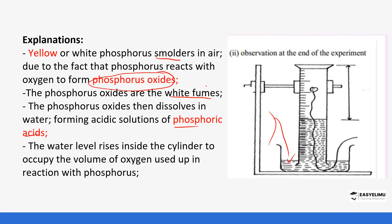The water level rises in the cylinder to occupy the space that was used up by oxygen. As the phosphorus reacts with the air to form oxides, it consumes the oxygen in the cylinder. The space initially occupied by oxygen is left as a vacuum, so the water rises to fill that space, and the water level in the trough decreases accordingly.